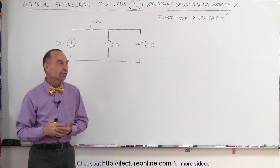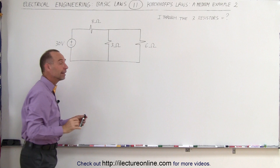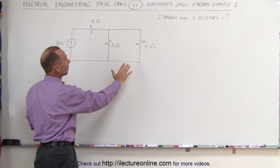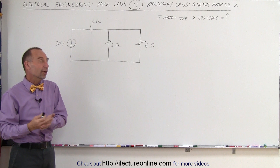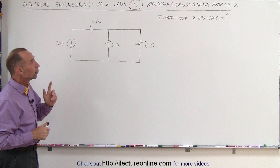Welcome to ElectronLine. Here we have another example of how to apply Kirchhoff's laws. Here is a two-loop circuit. We have a voltage source and three resistors. Now we know that this problem can be solved much easier using the methodology of finding the equivalent resistance, then finding the total current and seeing how the current branches out. But in order to illustrate how to use Kirchhoff's laws, this is a good example.